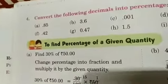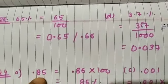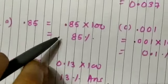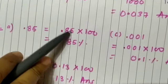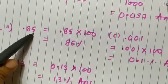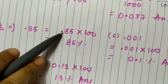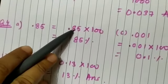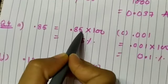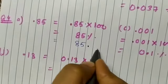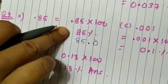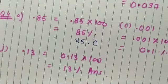Last question: convert the following decimals into percentage. First: 0.85. To convert a decimal into percentage, multiply by 100 — shift the decimal point two places to the right. First digit, second digit — after 85 there is nothing, so 85.0, which equals 85 percent.